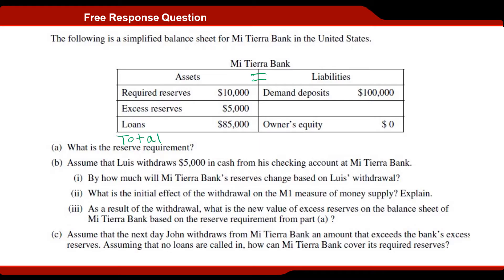Let's go ahead and sum this left-hand column of assets and see what we come up with. Ten plus five is fifteen, and fifteen plus eighty-five is one hundred thousand. So that means we've got one hundred thousand dollars worth of assets at Meteora Bank. Now assets must equal liabilities, so let's take a look over here on the liability side of things and see if that column also adds up to one hundred thousand.